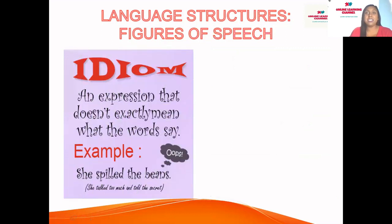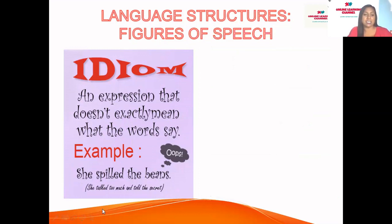An idiom is an expression that doesn't mean what the words literally say — it's a set of words that mean something else. Example: 'She spilled the beans' — the person didn't literally spill beans on the floor. As an idiom it means she talked too much, or she told someone a secret.